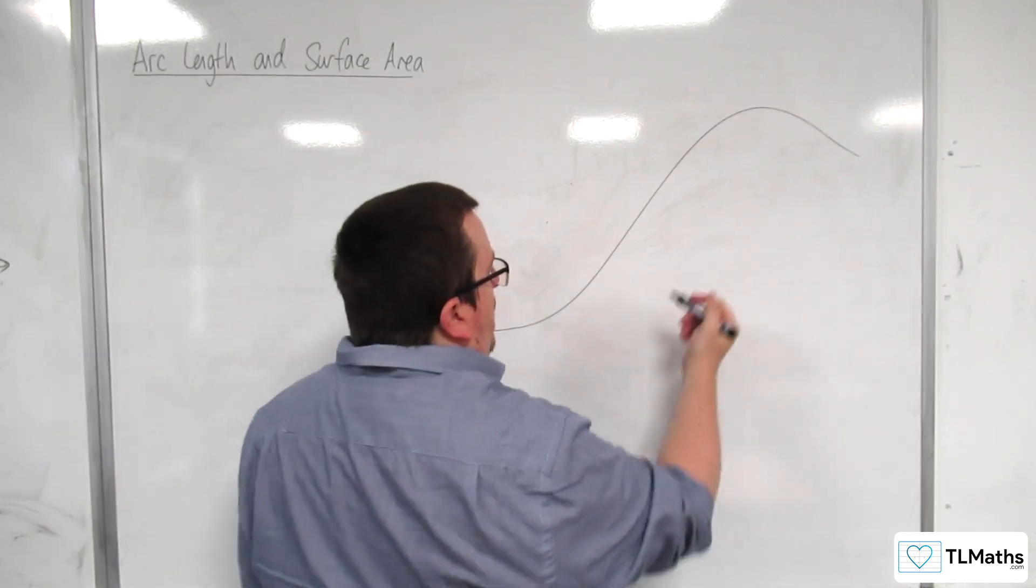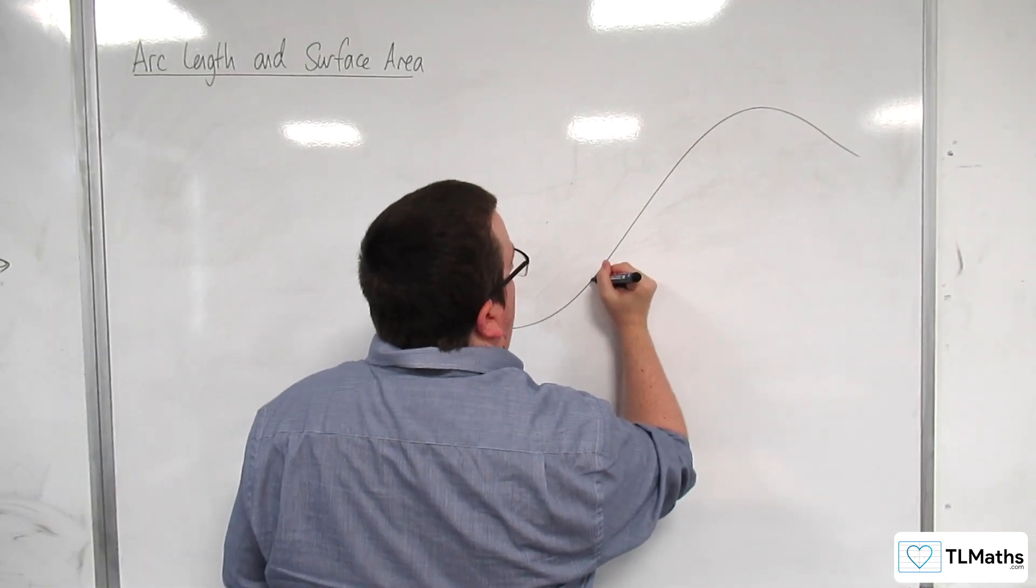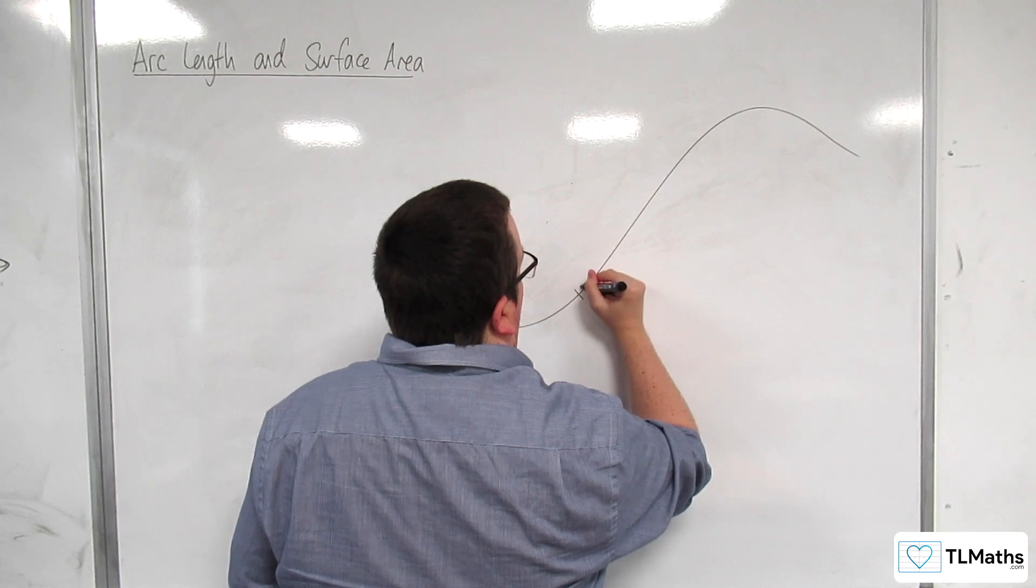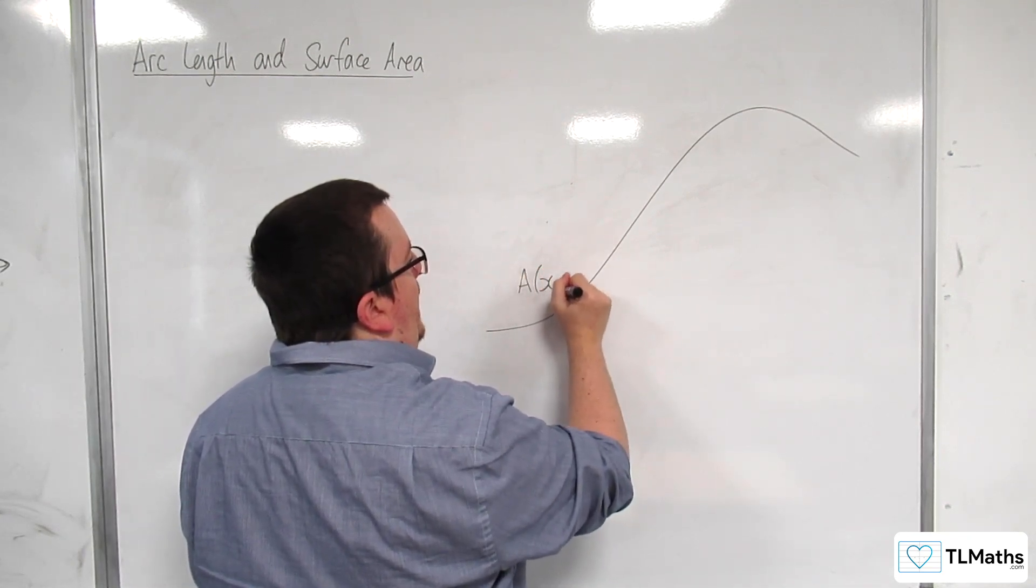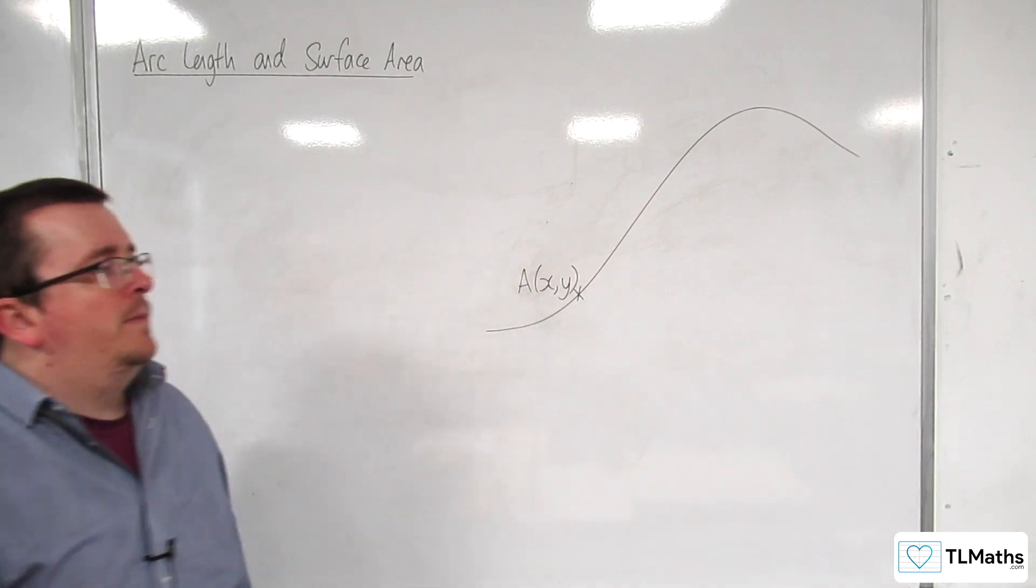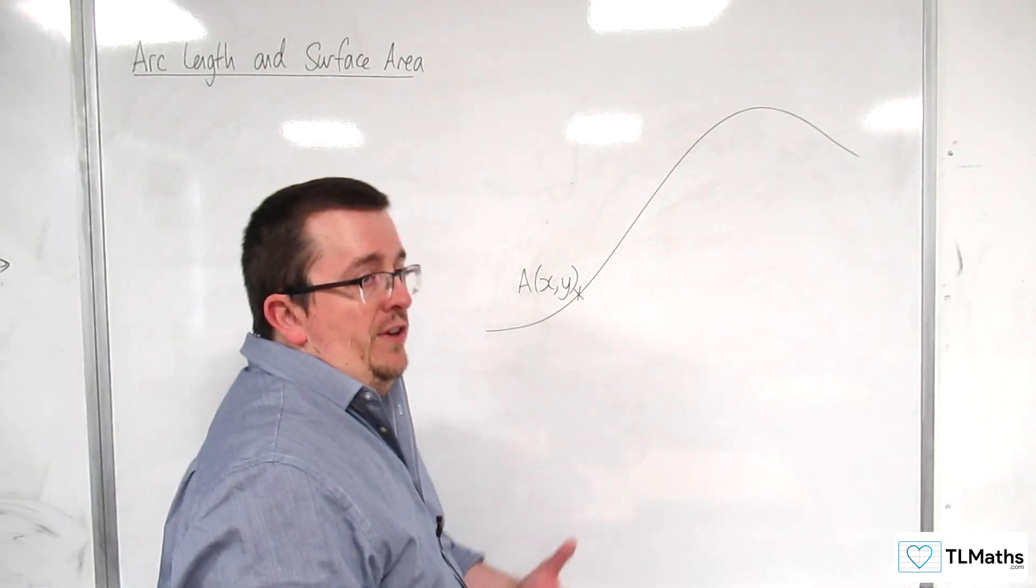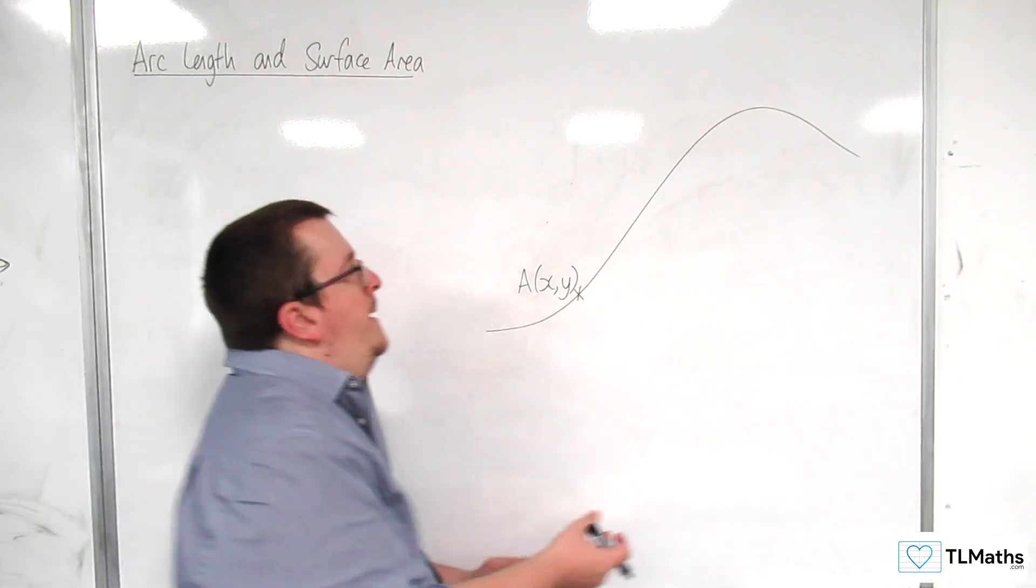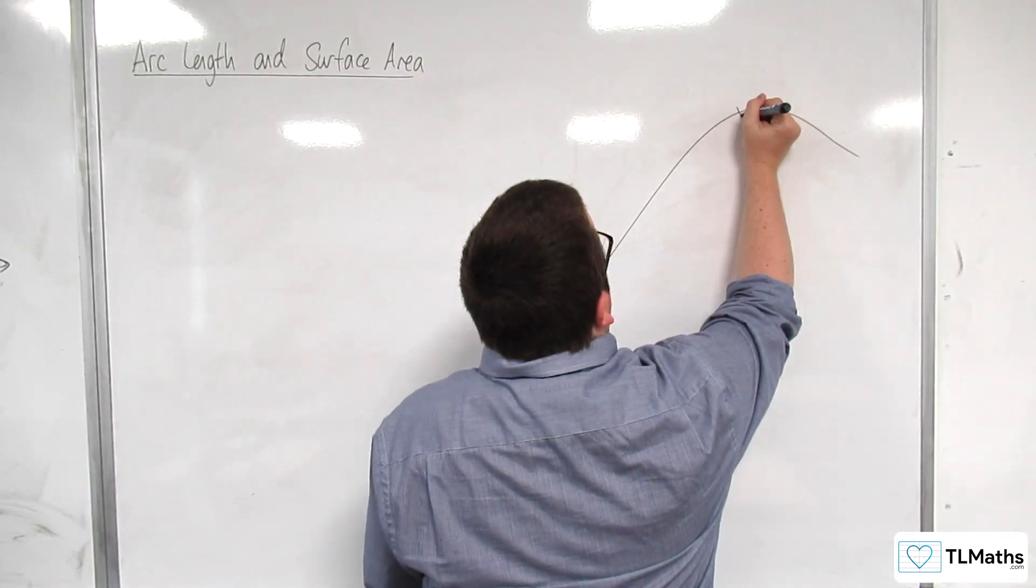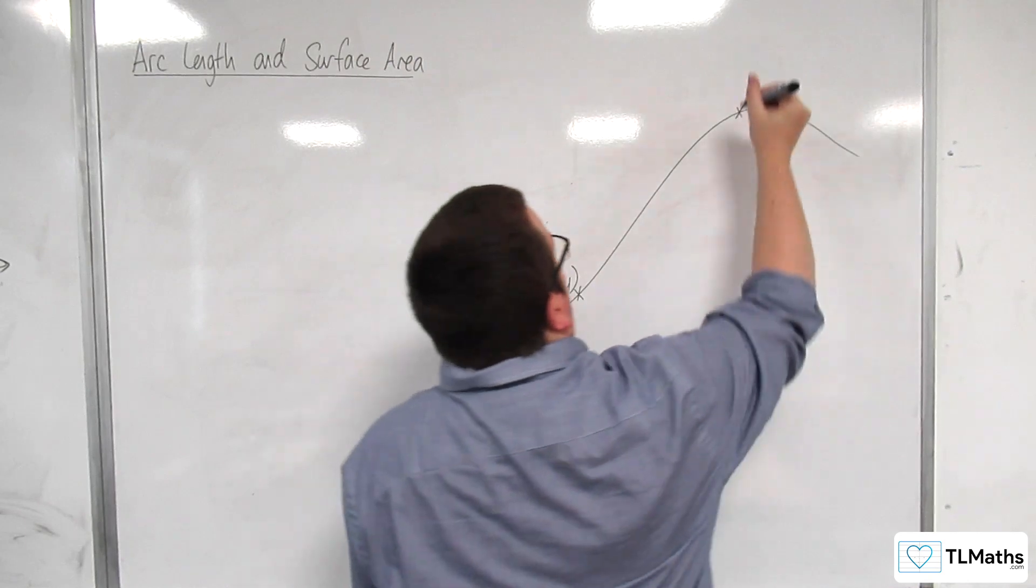So let's say I choose this point here and we're going to call that point A and it's going to have coordinates x, y. Now I'm going to choose another point, which generally you would pick close to that point, but I'm going to choose this point here and we're going to call that point B.